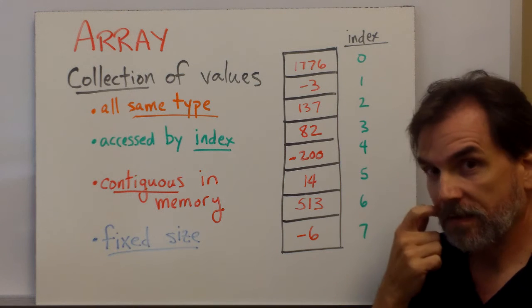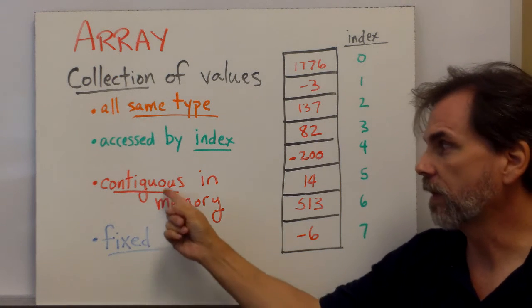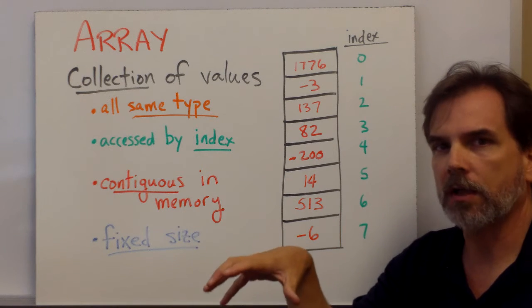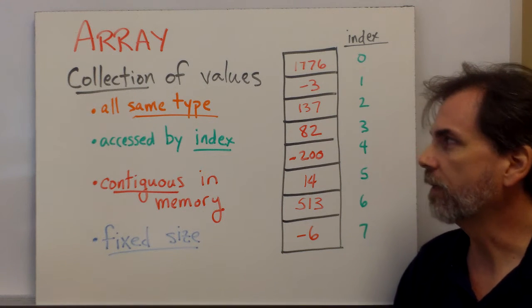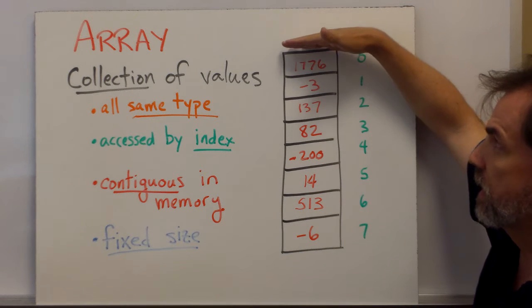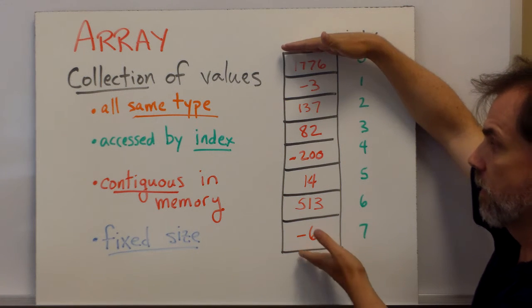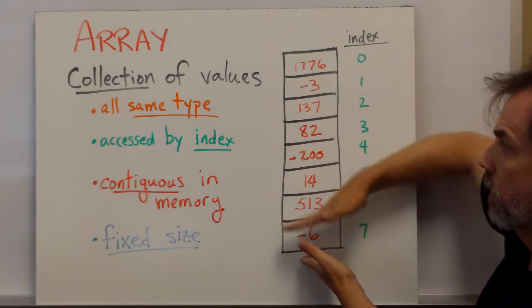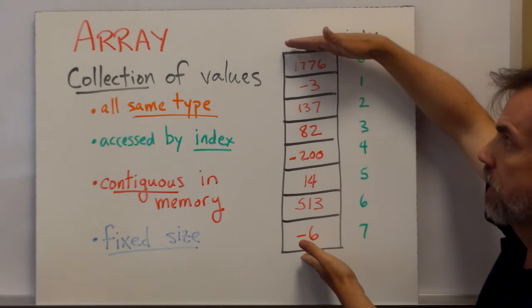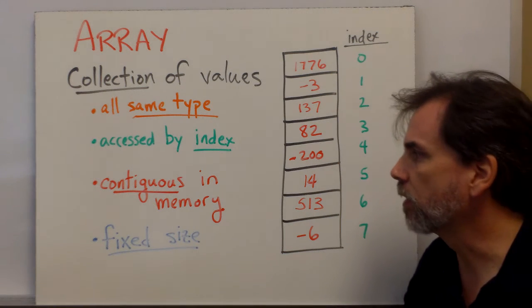The third thing that is important about arrays is that they're allocated as one chunk of contiguous memory. So we know that if I allocate eight integers in an array, it's going to begin at a particular address, and it's going to end at a particular address, and all eight integers will occupy space in that memory, one right after the other. So they're contiguous in memory.